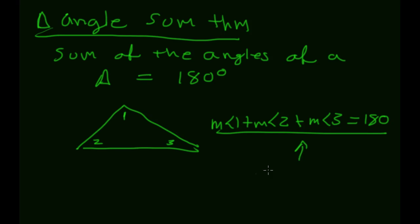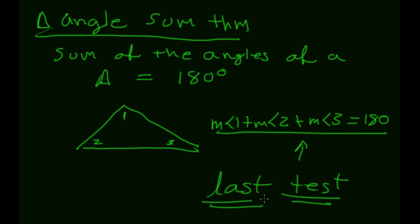You actually proved this on your last test — if you look back at that assessment, the proof was part of it. It uses Euclid's parallel postulates to form a couple of other angles. So we do know that the angles of a triangle have to add up to 180 degrees.